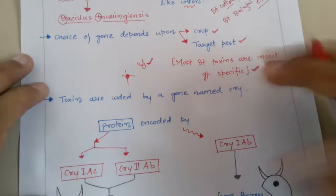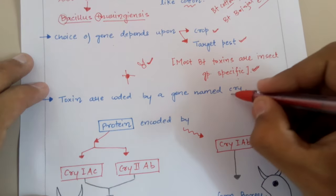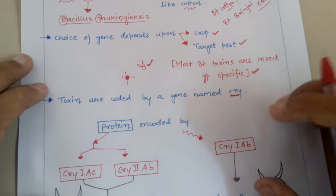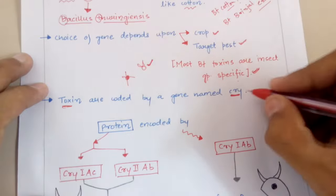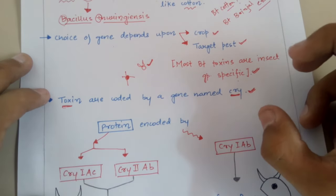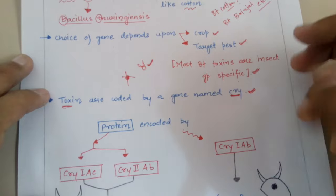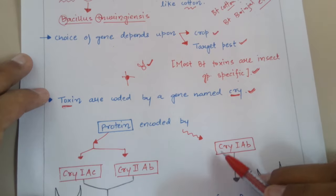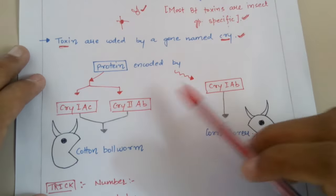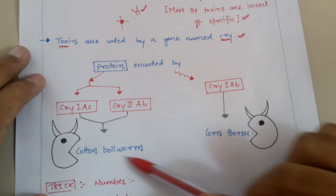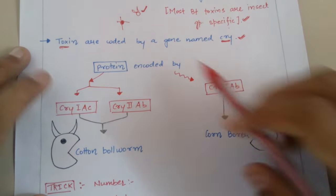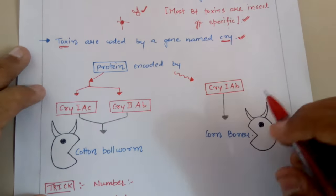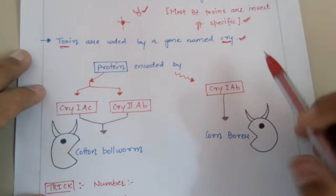The toxins are coded by genes named cry. Cry is a group of genes which code some toxins, and those toxins are proteinaceous in nature. The proteins encoded by some cry genes affect the growth of or kill some kind of insect pest.